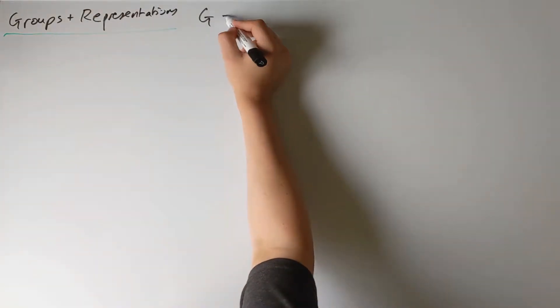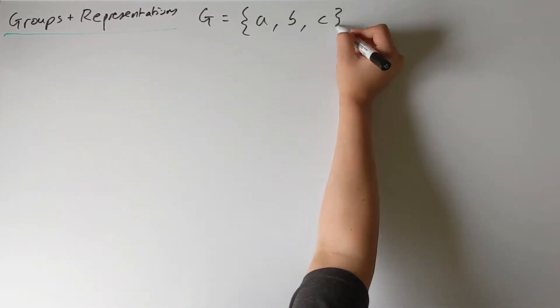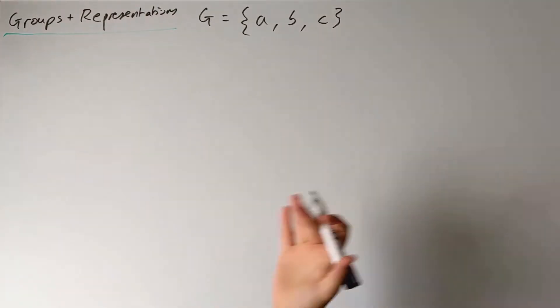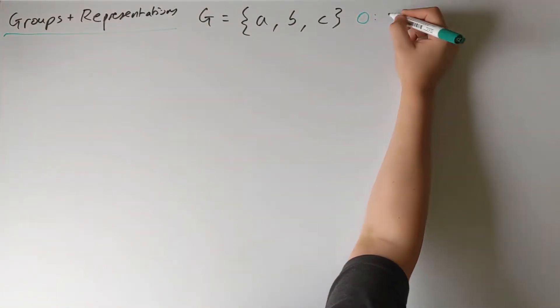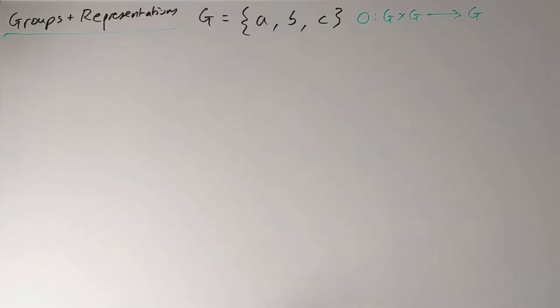I'm going to begin with the set G with three elements a, b, and c. It makes no sense to say that this set is a group by itself. We need to define with respect to which composition operation the set becomes a group. We recall that the composition operation is a map that takes two elements from the group and maps it to a third element in the group. So how do we define this composition operation?